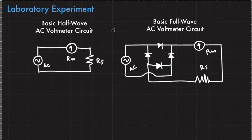For your lab experiment, you will be implementing a basic half-wave AC voltmeter circuit and a basic full-wave AC voltmeter circuit. For each circuit, you'll be able to compute for a value of the multiplier resistance.